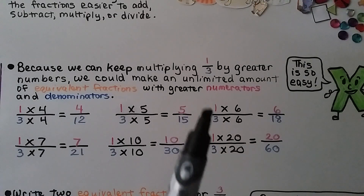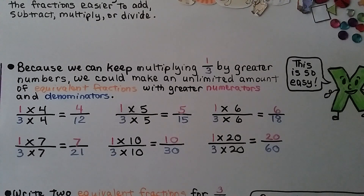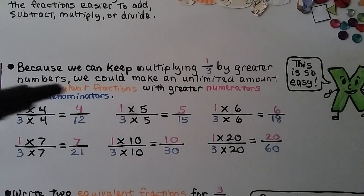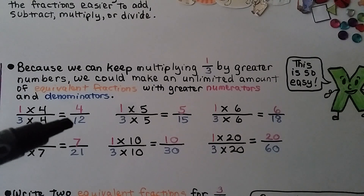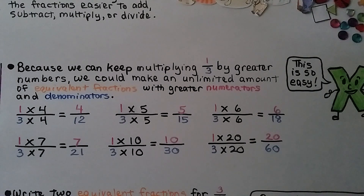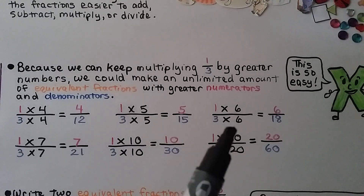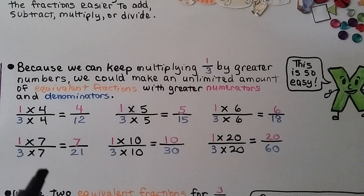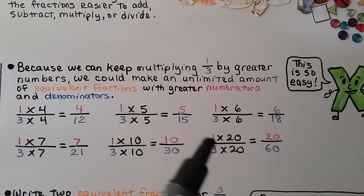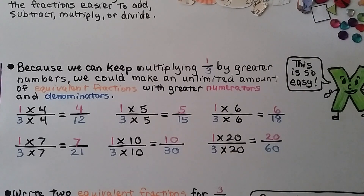Because we can keep multiplying one-third by greater numbers, we could make an unlimited amount of equivalent fractions with greater numerators and denominators. We have one-third. We can multiply both the numerator and denominator by four and get four-twelfths. Multiplying by five gives five-fifteenths. By six gives six-eighteenths. By seven gives seven twenty-firsts. By ten gives ten-thirtieths. By twenty gives twenty-sixtieths. We could keep going — even multiply by a million and get an equivalent fraction.